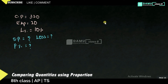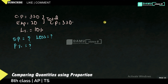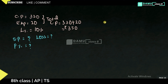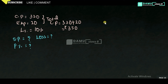Our fifth problem: cost price is 330 rupees and expenses are 20 rupees. Total cost price means we include expenses, so that is 350 rupees. Loss percentage is given as 10%. We have to find selling price, loss, and profit percentage.